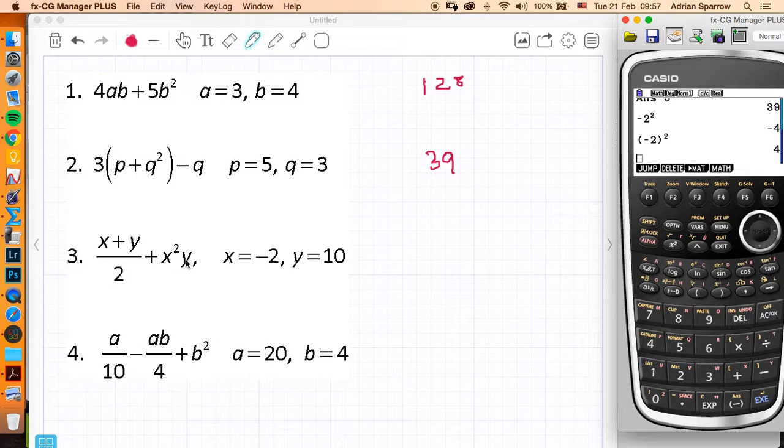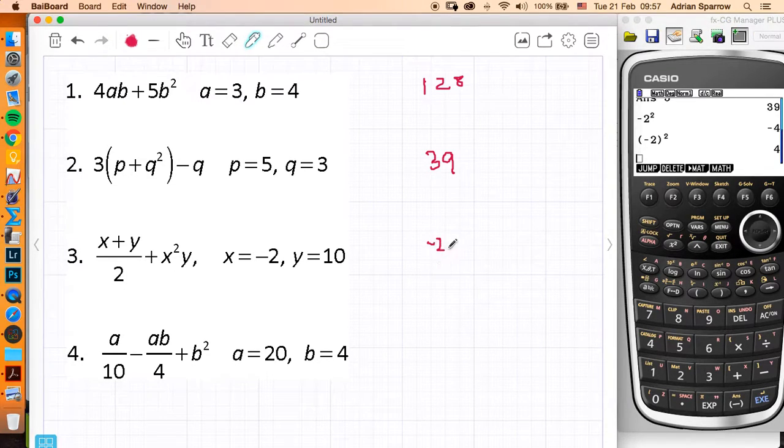So this is 4 times y, so we're going to have minus 2 plus 10 divided by 2 plus 4 times 10. So now I'm going to work out this particular part here, which is 8 divided by 2, which is 4 plus 40, 44.